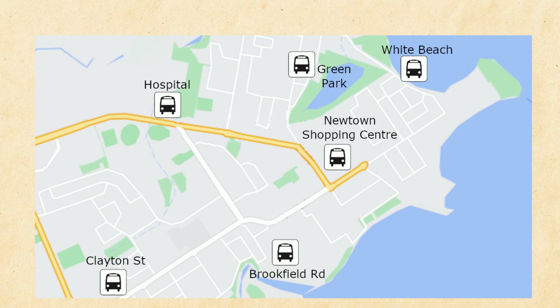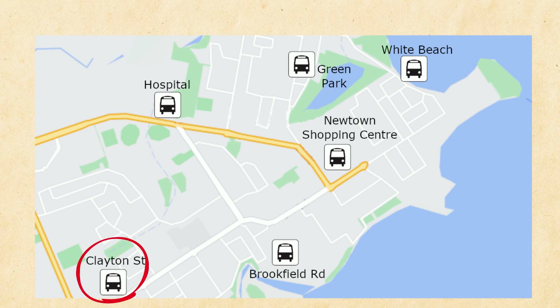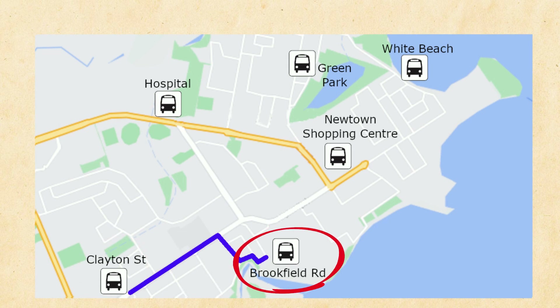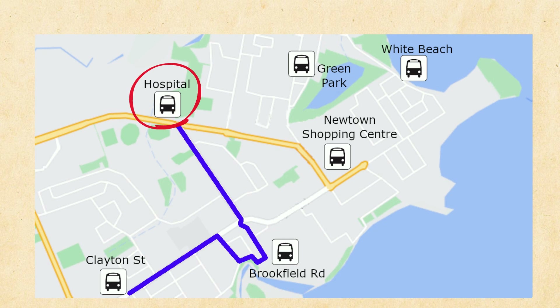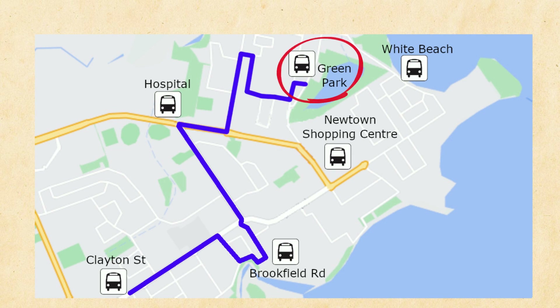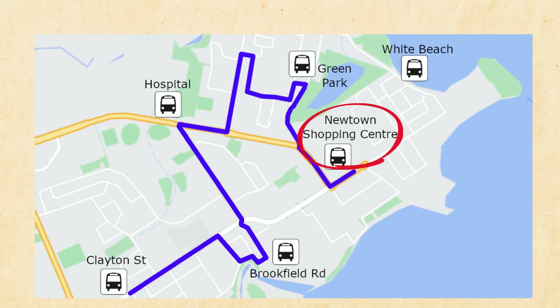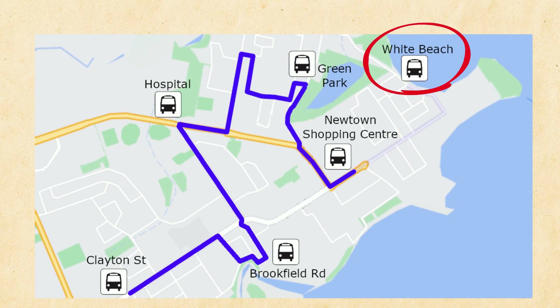Let's take a look at the stops on this map. The bus will start here at Clayton Street, its next stop Brookfield Road, then the hospital, Green Park, Newtown Shopping Centre, and finally White Beach.